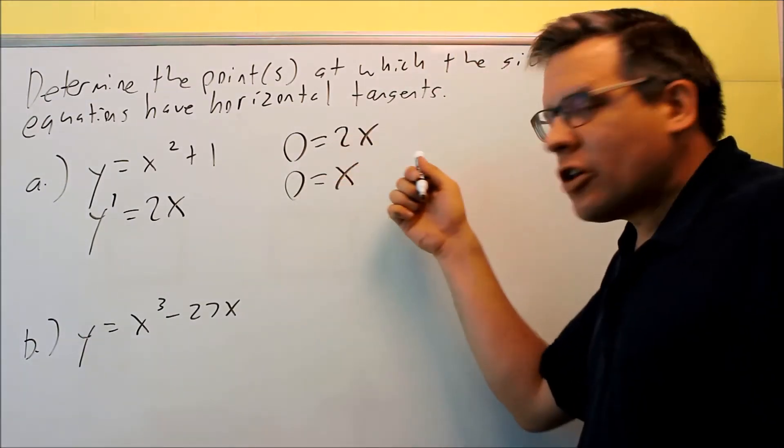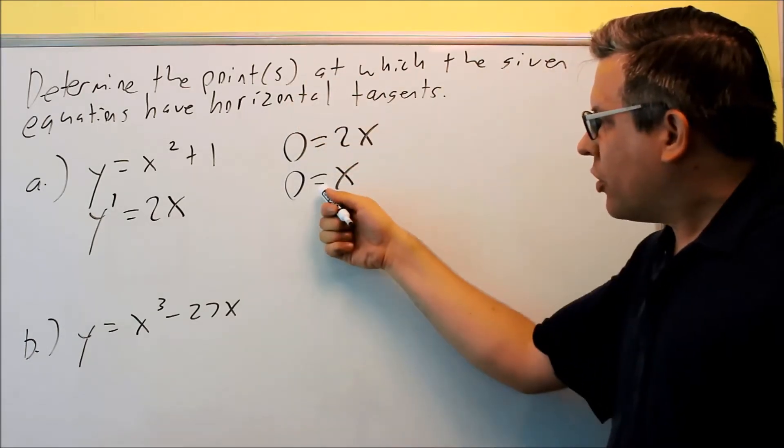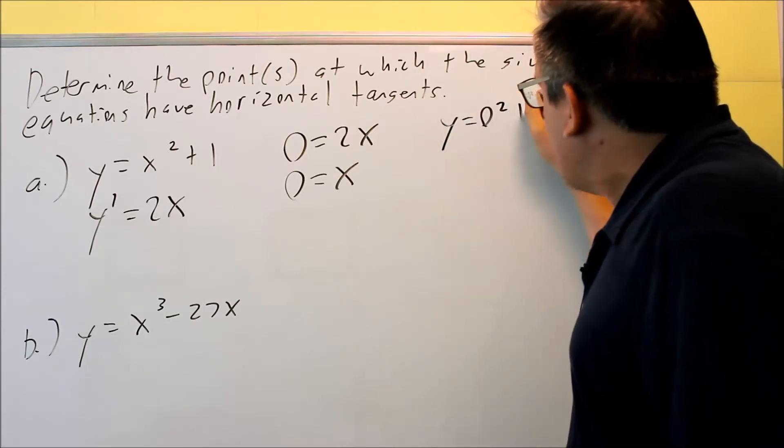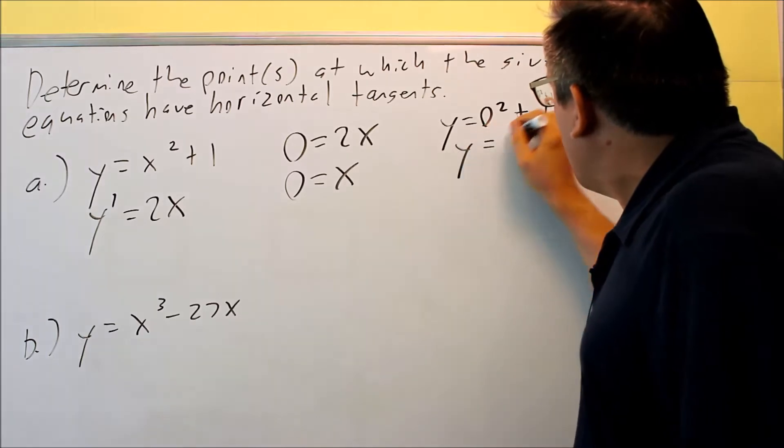Now, that's part of the answer, but it asks for point. So you need to put this back into the original one and find the y-coordinate. So y equals zero squared plus one, and when you do that, you'll get one.